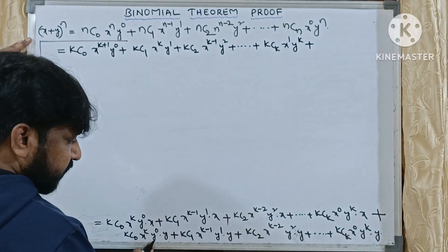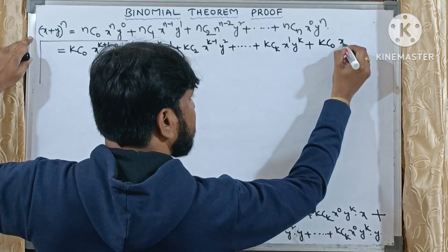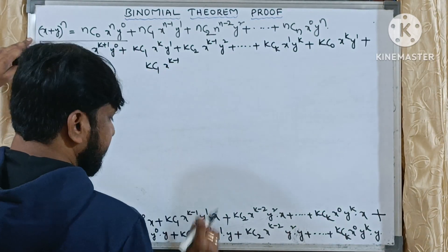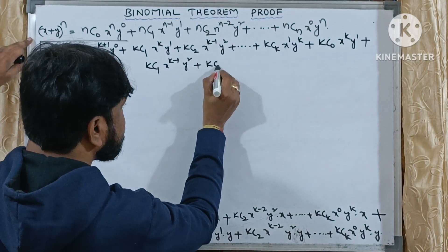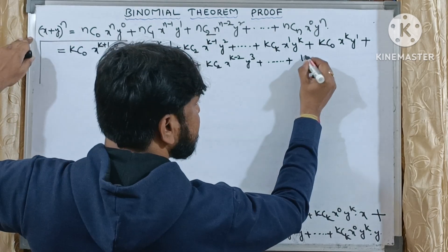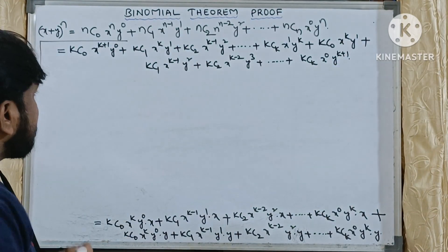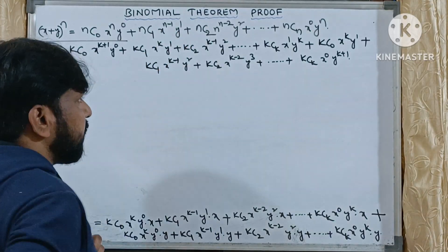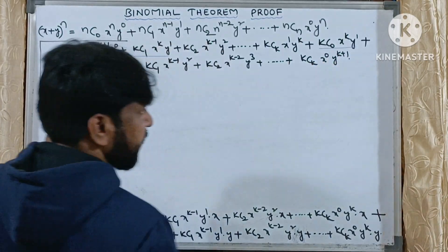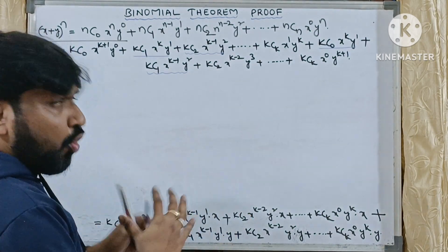Now if you observe this simplification, there are pairs of like terms. For example, x^k·y^1 appears in both parts, and x^(k−1)·y^2 also appears in both parts. So we take those common terms together. The first term kC0·x^(k+1)·y^0 and the last term kCk·x^0·y^(k+1) are standalone, and the middle terms combine in pairs.